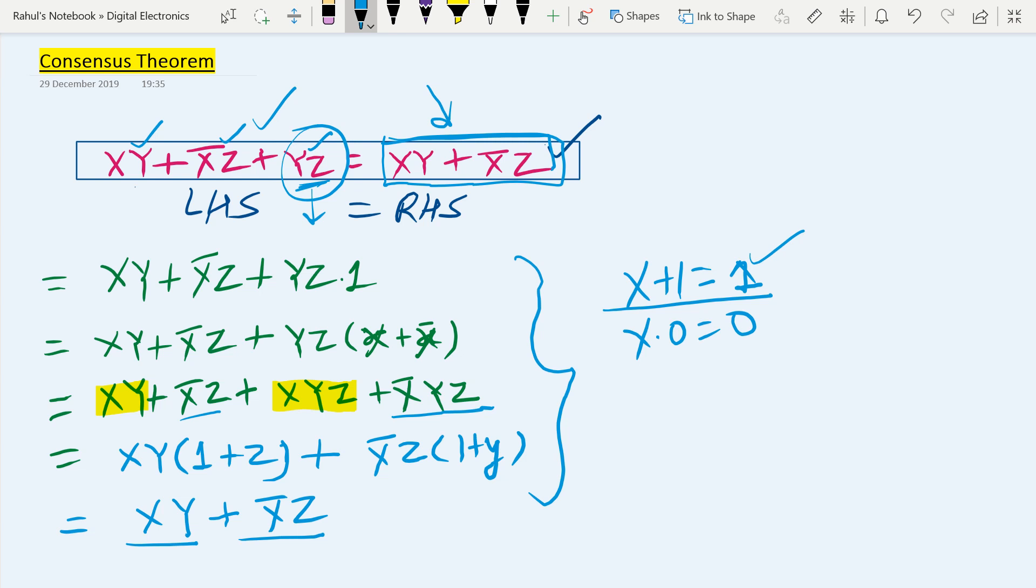However, you can directly use xy plus x bar z plus yz directly as xy plus x bar z. On the place of x you can get any kind of variable - a, b, c, any variable - but you have to just observe the expression whether it is in the consensus theorem expression or not. If it is, then you can directly write it like that. I hope it is all clear to you. Thank you so much guys, have a nice day.